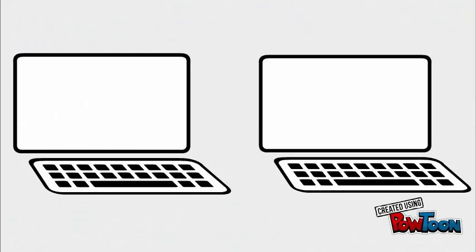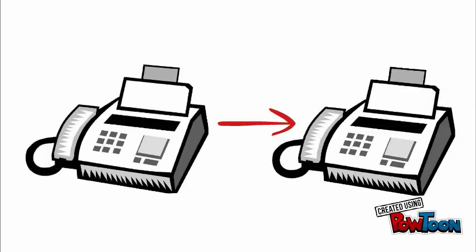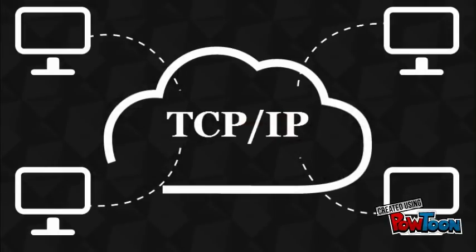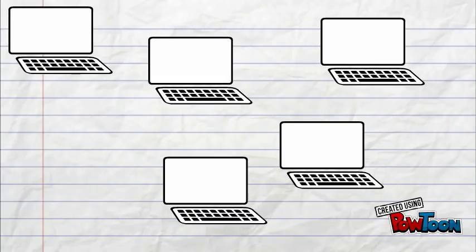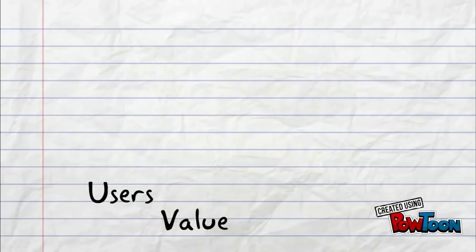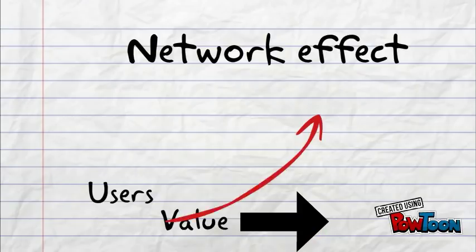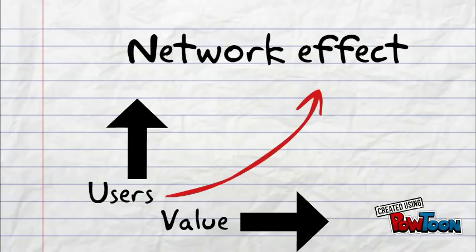Let's use a technology example for simplicity. Technology talks to other technology using language protocols. Fax machines used a protocol to talk to each other. VHS and beta were recording protocols. Your computer probably uses TCP/IP, the internet protocol, to connect with other computers on the internet network. The more users of a protocol or language, the more value that protocol can support. If only two people had fax machines, cell phones, or internet devices talking using TCP/IP, the protocols wouldn't have much value — there would be a limited number of people to communicate with. As more users link up using a specific protocol, more value gets created or supported by that protocol.